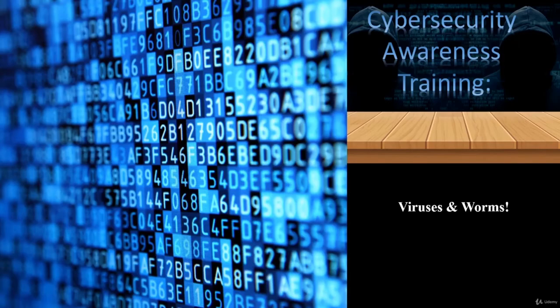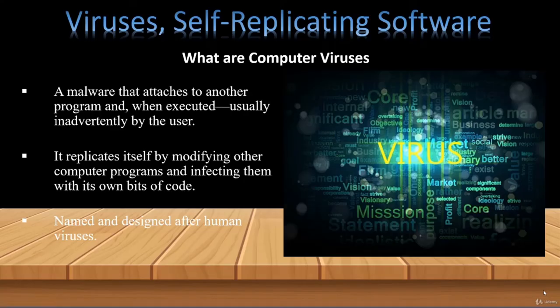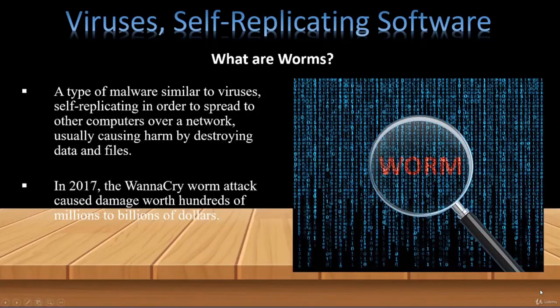Cybersecurity Awareness Training. Viruses and Worms. Viruses and worms are terms most people know — they've been around a very long time. Computer viruses work exactly like they do in the human body: they replicate and prevent normal operation. A computer virus attaches itself to known good programs and begins causing your computer to malfunction. Worms, on the other hand, burrow through networks, replicating and spreading across computers on those networks, often destroying files in the process. In 2017, the WannaCry worm affected several organizations, causing millions if not billions of dollars in damages through crypto ransomware.